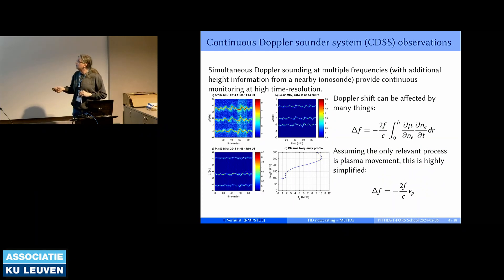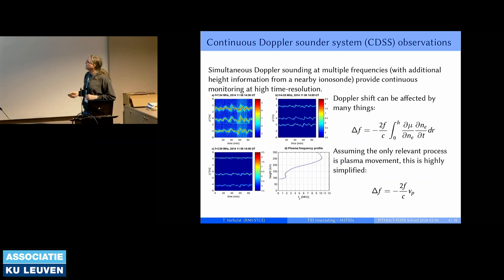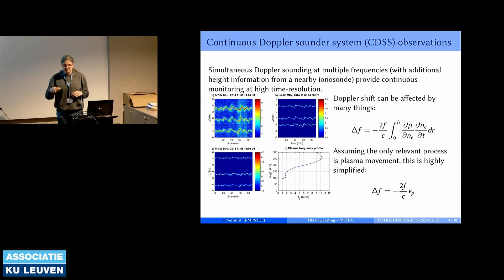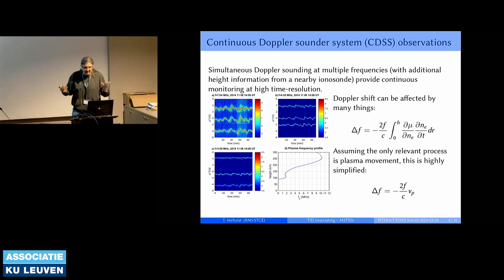Here you can see spectrograms with several nearby frequencies, and just by looking at the picture you can see the same features appearing in each frequency. What we are looking at is the Doppler shift of a frequency. Because we are using a continuous wave, you cannot — as is done with most radar systems — make measurements of arrival time of an echo, since the echo is also continuous. But you can look for changes in the Doppler shift.